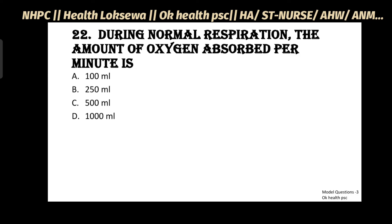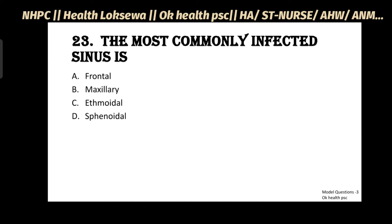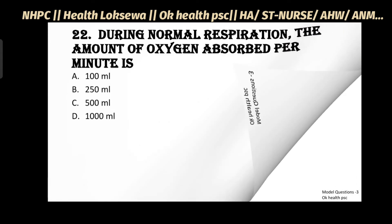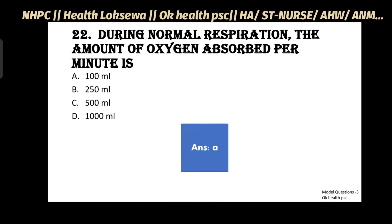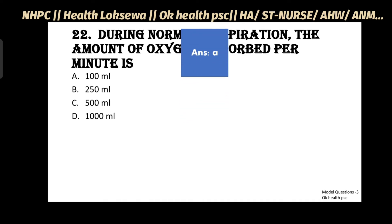Question No.22: During normal respiration, the amount of oxygen absorbed per minute is - 100 ml, 250 ml, 500 ml, 1000 ml. Answer: A - 100 ml.